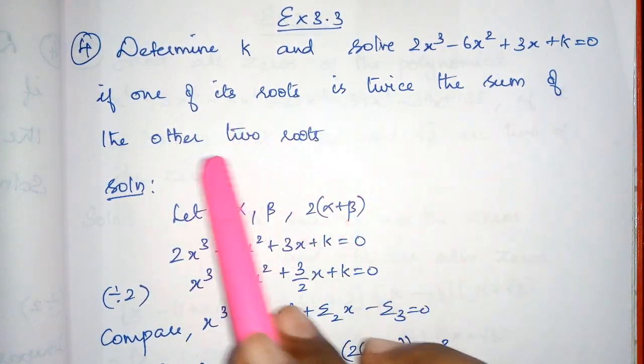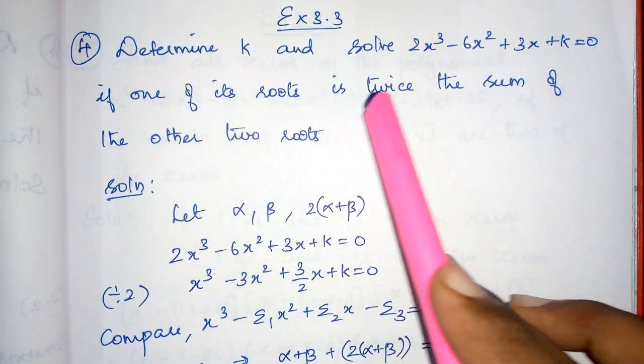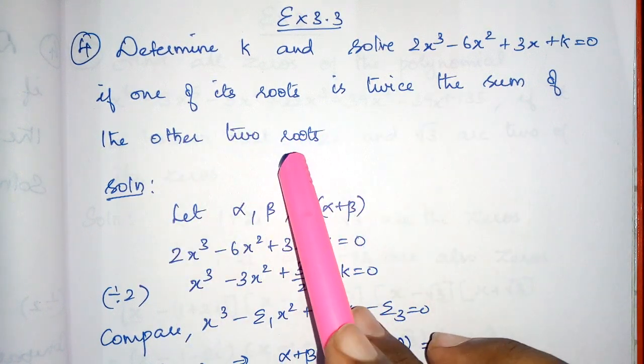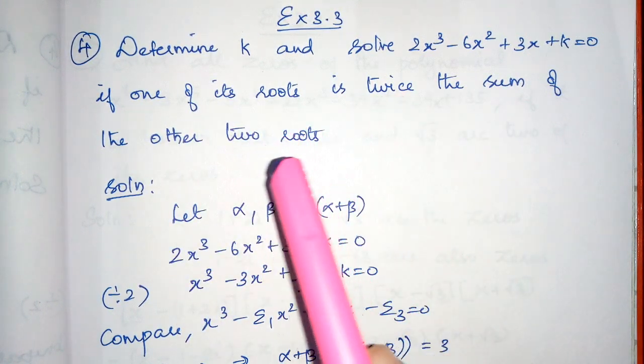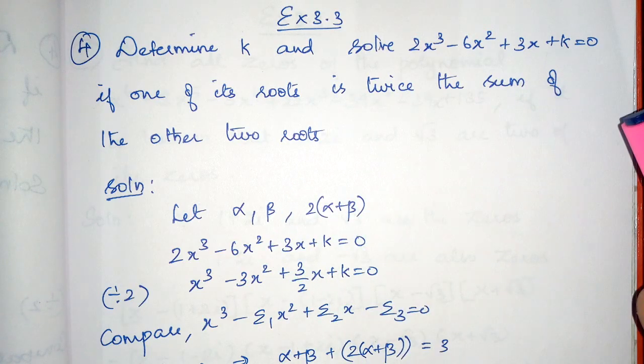So I will explain what is given here. One root is twice the sum of the other two roots. It means you have to add two roots and multiply by 2, you will get the third root.